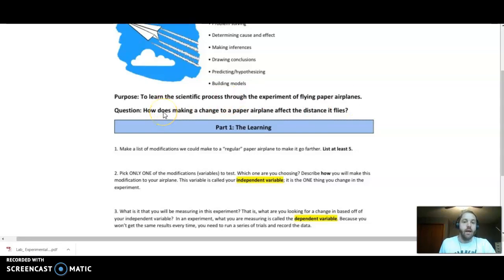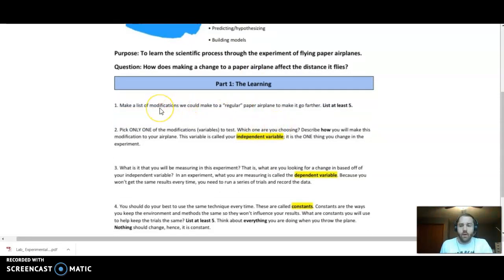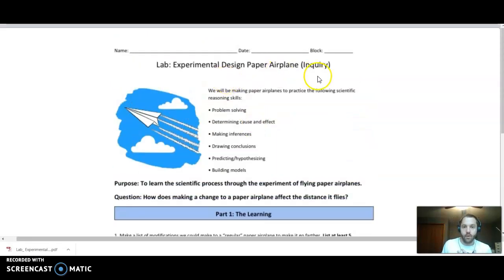The question we could ask is: how does making a change to a paper airplane affect the distance? So to do this lab, what you're going to need is really just a single sheet of paper. Even though we're making two airplanes, we should actually only use one sheet of paper. First thing you want to do in any experiment is come up with a list of modifications that we can make to a regular paper airplane. You need to list at least five. I'm not going to do that because this is still inquiry. I still want you to kind of learn by doing.